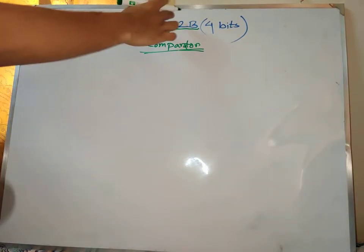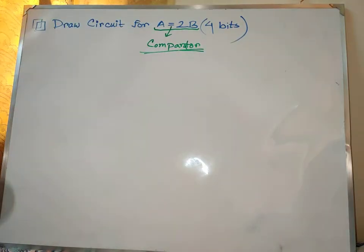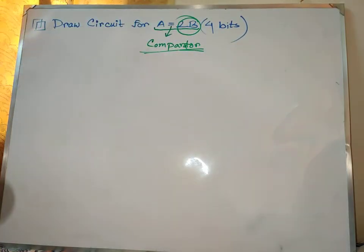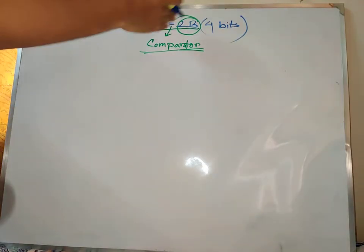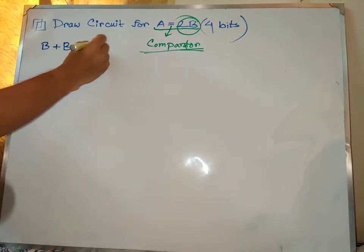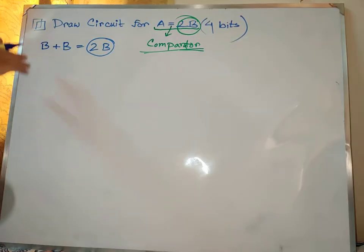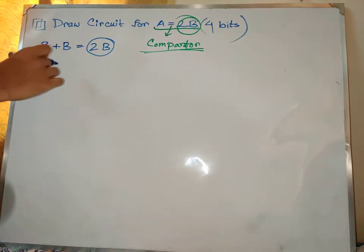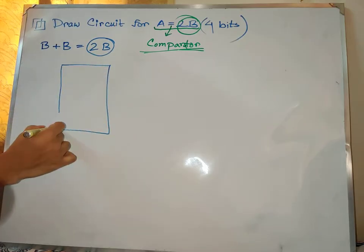So first, we have an equal-to comparator. But we need to implement 2b. To make 2b, when we have b plus b, we have 2b. So when we have 2b, we need to make a comparator. We need to learn how to do this circuit.